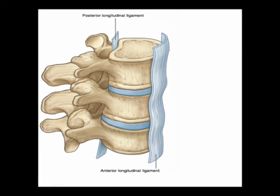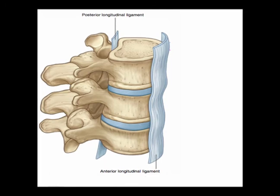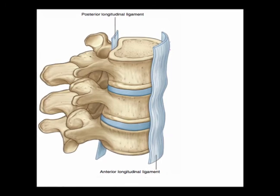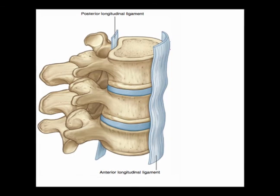The posterior longitudinal ligament is much thinner than the anterior longitudinal ligament, which is significant for the pathophysiology of disc herniations occurring posterolaterally.